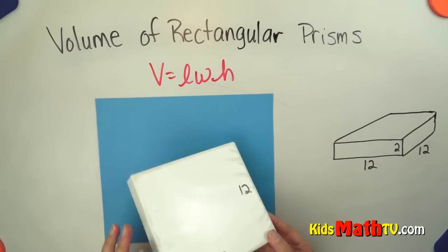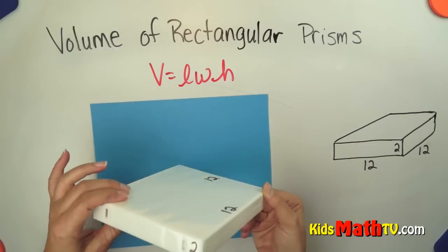I have a box here to kind of help you visualize. This is a rectangular prism. It's a box.